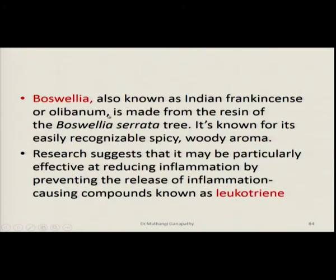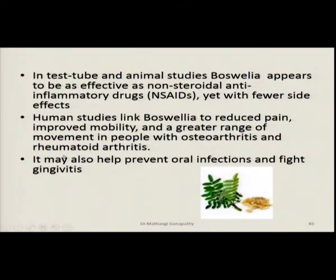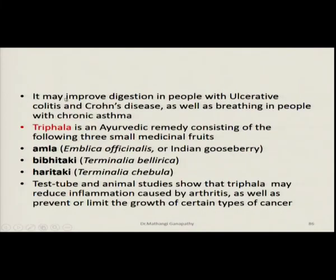Boswellia, also known as Indian frankincense, is made from the resin of the Boswellia serrata tree and is known for its easily recognizable aroma. Results suggest it may be very effective in reducing inflammation by preventing the release of inflammation-causing compounds called leukotrienes. In test tube and animal studies, Boswellia appears to be as effective as non-steroidal anti-inflammatory drugs yet with fewer side effects. Human studies link Boswellia to reduced pain, improved mobility, and greater range of movements in people with osteoarthritis and rheumatoid arthritis. It may also help prevent oral infections and fight gingivitis. Boswellia has been seen to improve digestion in people with ulcerative colitis and Crohn's disease, as well as breathing in people with chronic asthma.